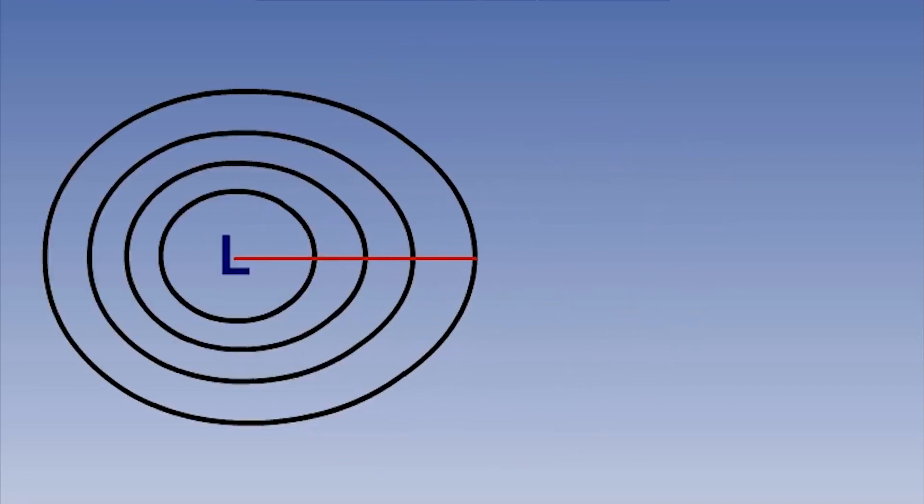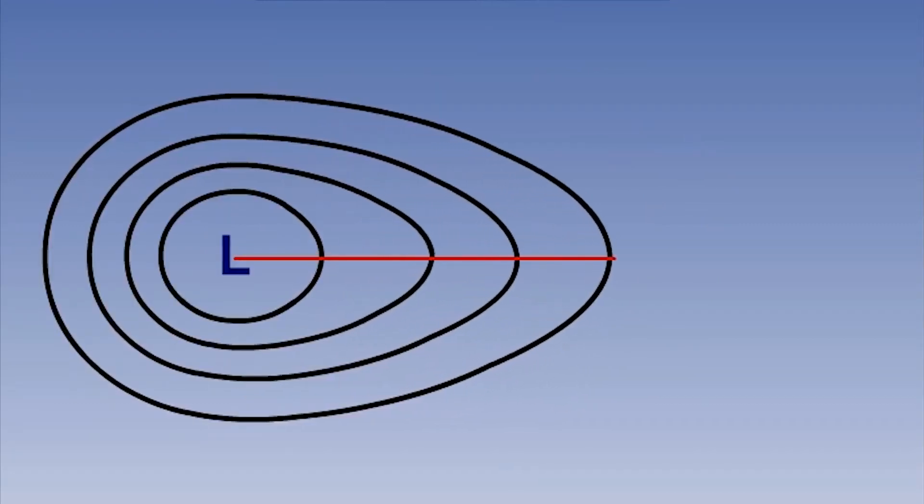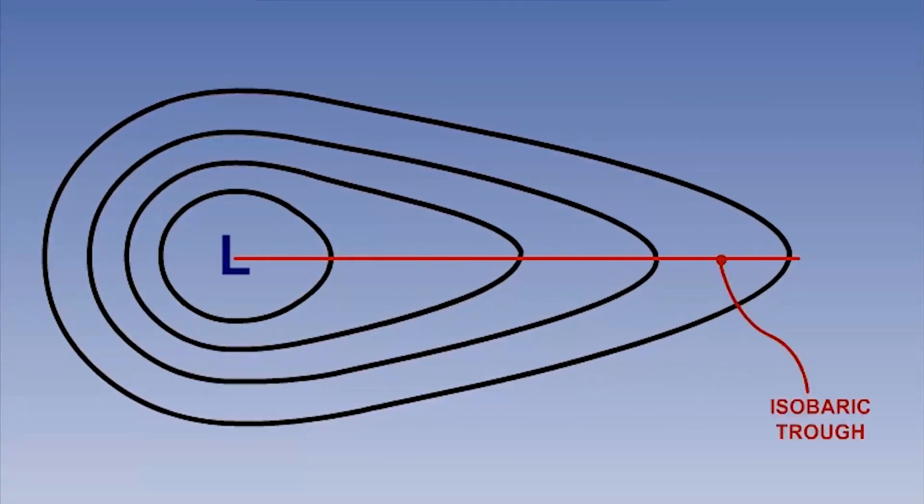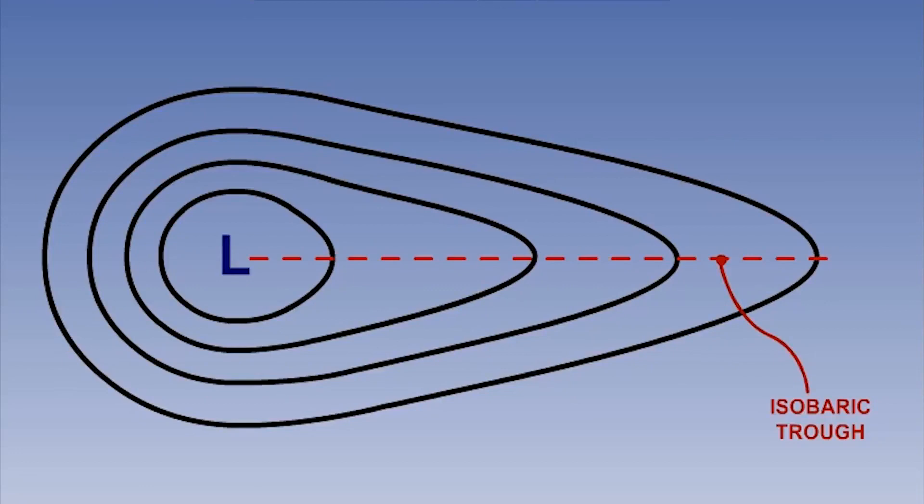If we see low pressure isobars protruding outwards from the low pressure into an area between two highs, we call this an isobaric trough. As you can see, isobars are a very useful way of visualizing pressure patterns, and hence the weather.